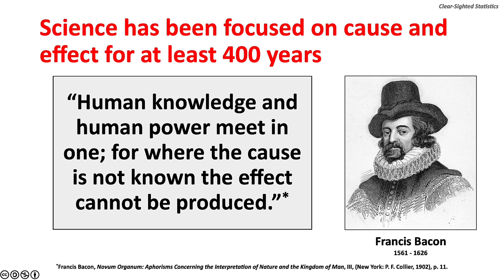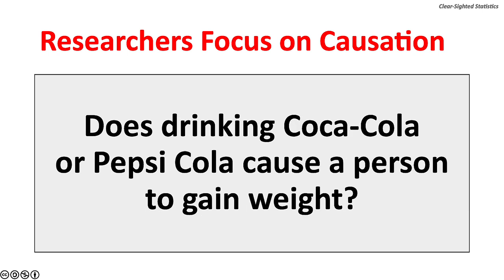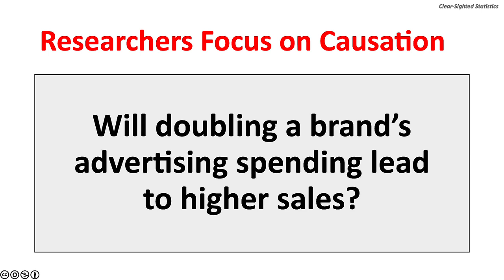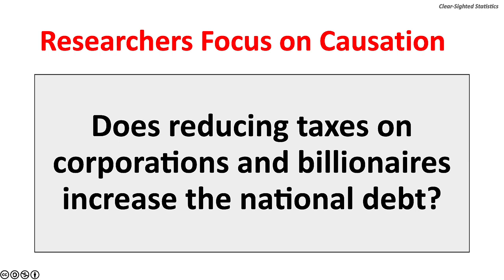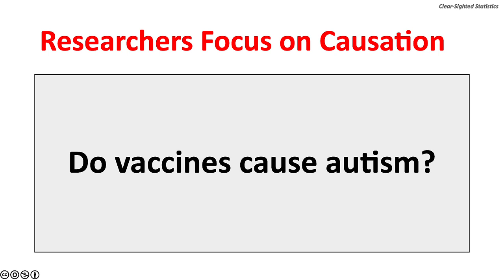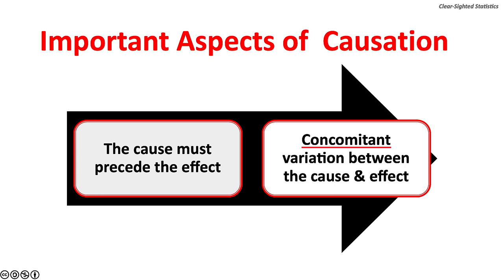Researchers today focus on causation. Examples include: do statins lower LDL cholesterol and reduce the risk of heart disease? Does drinking Coca-Cola or Pepsi-Cola cause weight gain? Will doubling a brand's advertising spending lead to higher sales? Do mosquitoes spread the West Nile virus? Does reducing taxes on corporations increase the national debt? Do vaccines cause autism? There are two important aspects of causation: the cause must precede the effect, and there must be a concomitant variation between cause and effect — a change in the cause leads to a change in the effect.